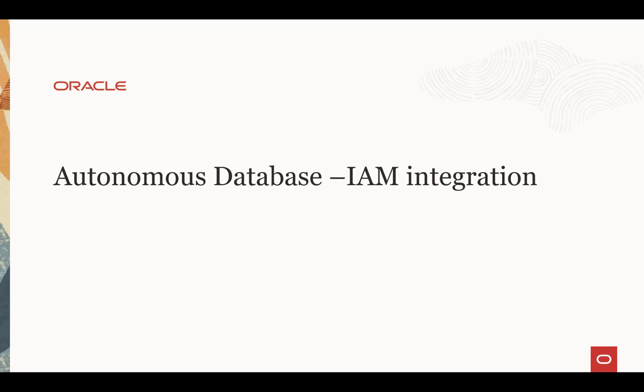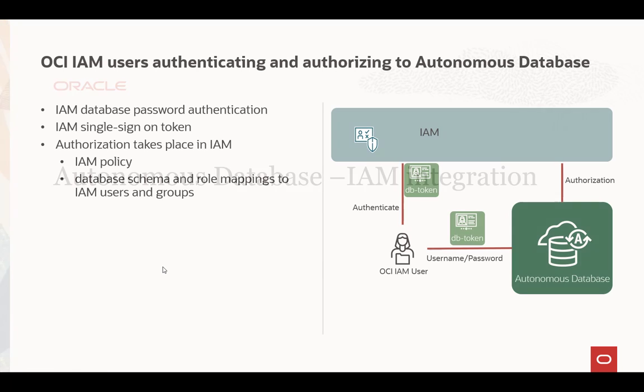You can now authenticate and authorize OCI IAM users with the Autonomous Database on Shared Infrastructure. There are two ways a user can access the Autonomous Database. One is using IAM Database Password Authentication, very similar to how it's done with the Active Directory integration that exists today — IAM stores the password verifier to be retrieved by the Autonomous Database. The second is a brand new token-based authentication, where the IAM user authenticates to IAM and gets a database token that is then sent to the Autonomous Database for access.